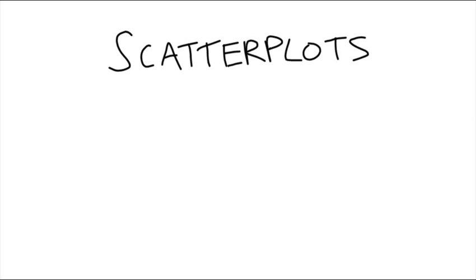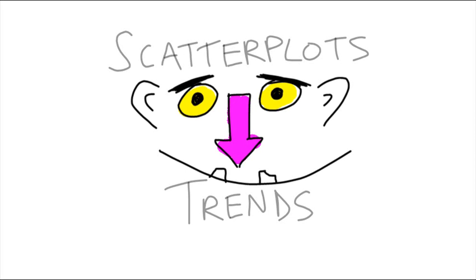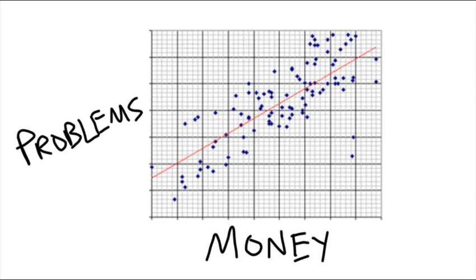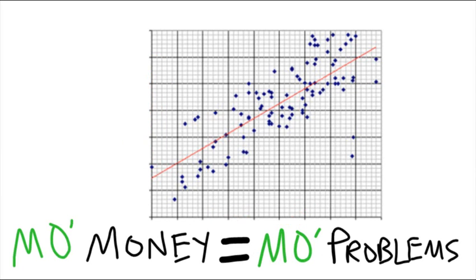Scatter plots help us to see trends, like that guy. Here's a scatter plot of money and problems, and as you can see, as money goes up, so too do problems. So it actually is true that mo money equals mo problems.